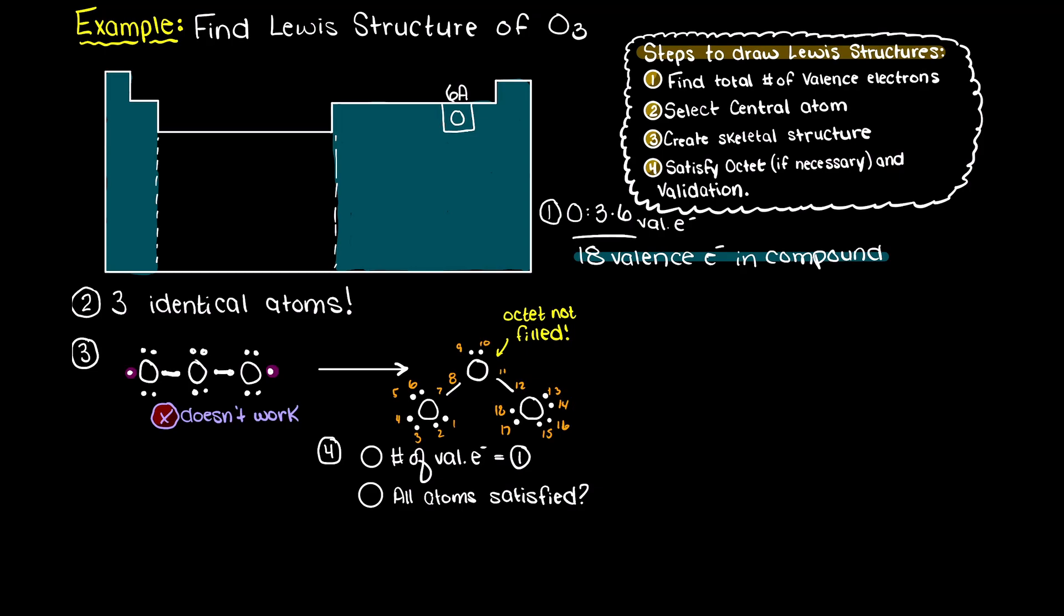So, what can ozone do to better stabilize itself? Well, there are two scenarios. Either the left or the right oxygen will give up a lone pair of electrons and share them with the central atom, thus stabilizing and validating our Lewis structure.